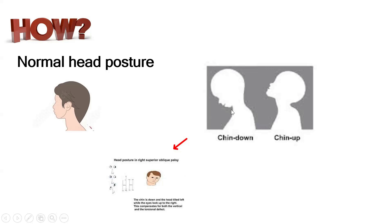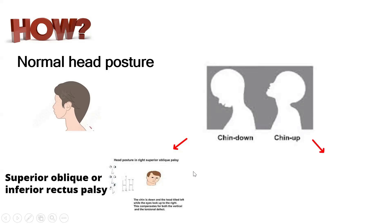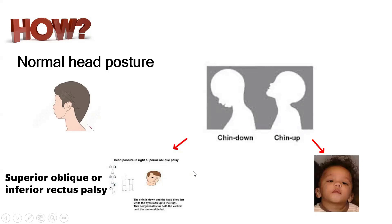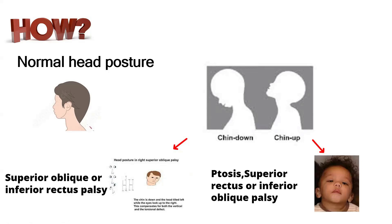Chin down position is seen in superior oblique palsy or inferior rectus palsy. Chin up position is most commonly seen in ptosis, and also in superior rectus palsy or inferior oblique palsy. The head always turns in the direction of the paralytic muscle's action — chin down corresponds to muscles that move the eye downward (superior oblique and inferior rectus), and chin up to muscles that move the eye upward (superior rectus and inferior oblique).